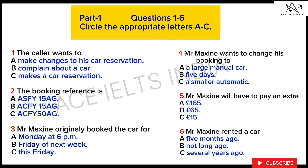There is a difference in price, though. For the extra two days? Yes, but also for the size of the car. The estate is fifteen pounds more expensive per day than the saloon car you have already booked. OK, and how much extra is it altogether, then? That makes it an extra one hundred and sixty-five pounds.